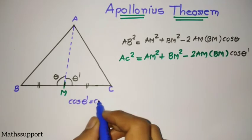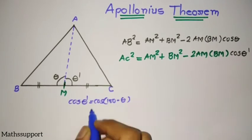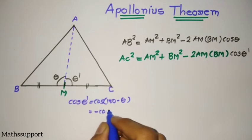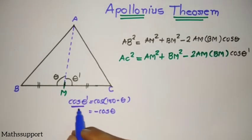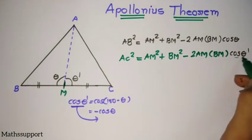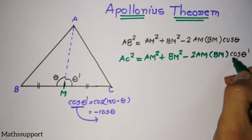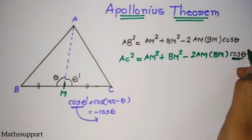If I want to find cos theta dash, it will be cos(180° - θ), which is nothing but minus cos θ. So in place of cos theta dash, I will use minus cos θ. Canceling the dash, the minus becomes plus.